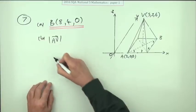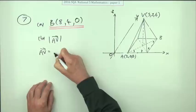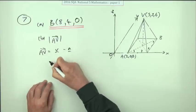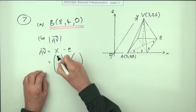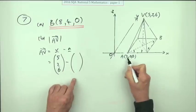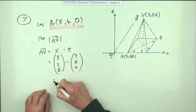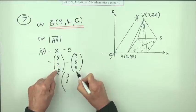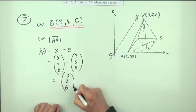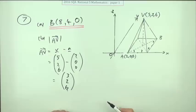First of all, find that AV would be V minus A. V is (5, 2, 6), A is (2, 0, 0). So five take away two is three, two take away zero is two, six take away zero is six. The same numbers they had before - the six, two, three - that's the sizes of those parts of the two Pythagoras.